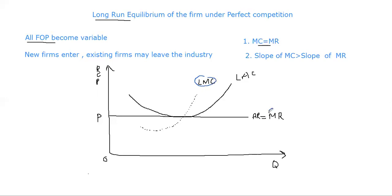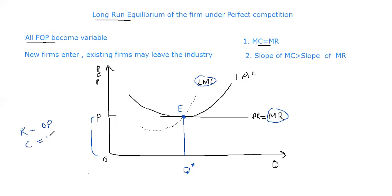The marginal cost curve and marginal revenue curve intersect at point E. Drawing a vertical perpendicular gives us Q-star — the equilibrium output level of the firm. Looking at the firm's revenue, the vertical distance OP is the firm's total revenue. The firm's cost is also OP. So the difference — profit — equals OP minus OP, which is zero. Profit equals total revenue minus total cost, and since both are equal, profit is zero, meaning the firm earns normal profit.